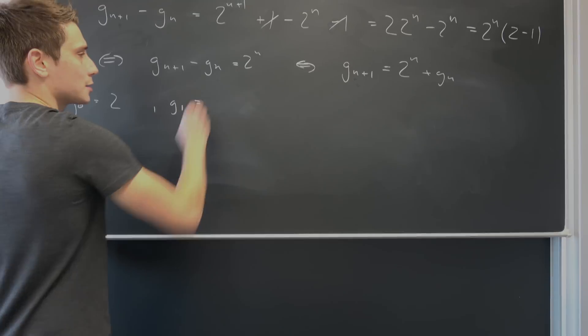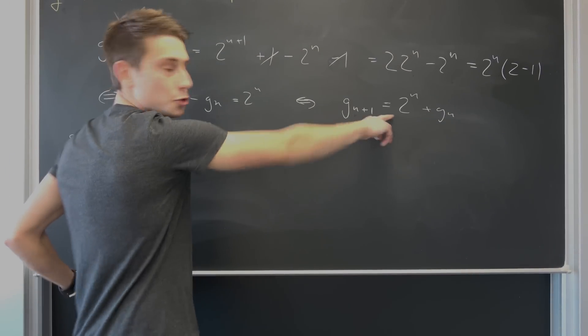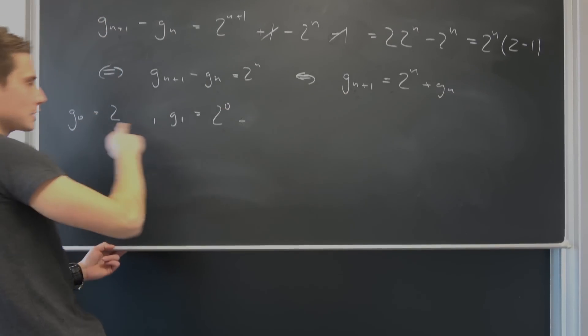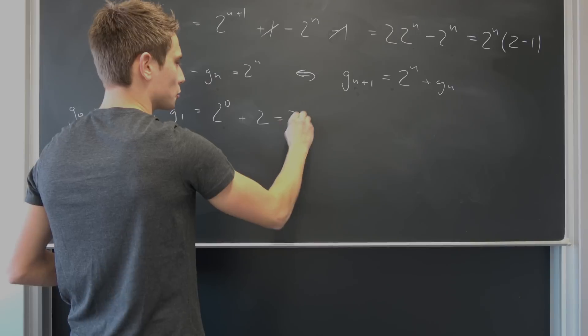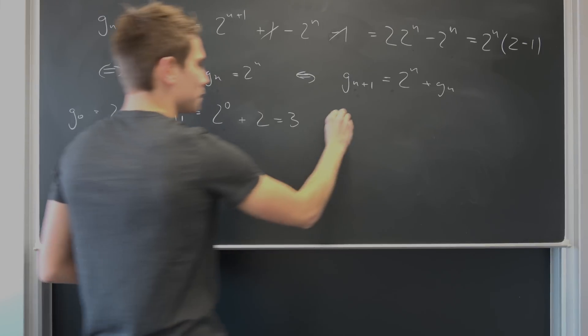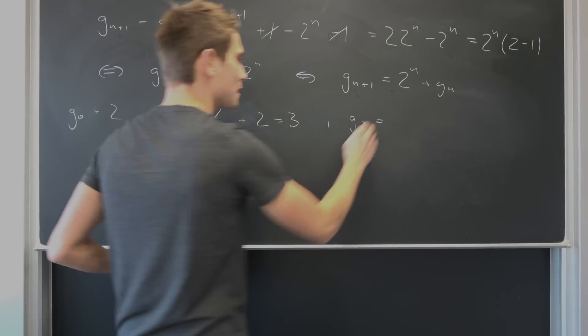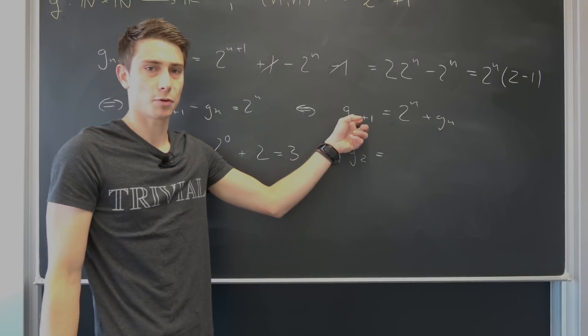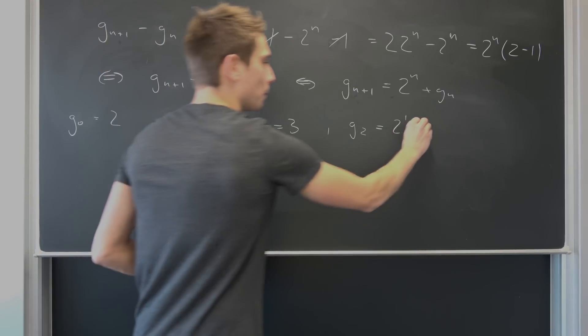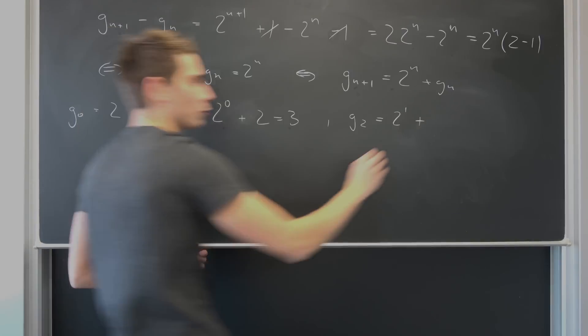So if we consider g_0 an initial value being 2, we can move on. So why not take a look at g_1 then? How can we derive g_1? Well, we are going to plug 0 into all the n's right here to land at g_1. So g_1 is going to be 2^0, which is 1, plus g_0. Well, g_0 is 2, so this is going to result in 3.